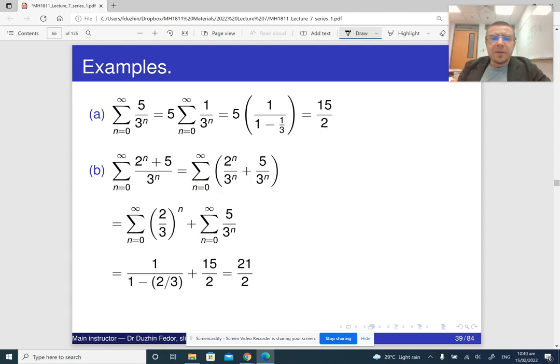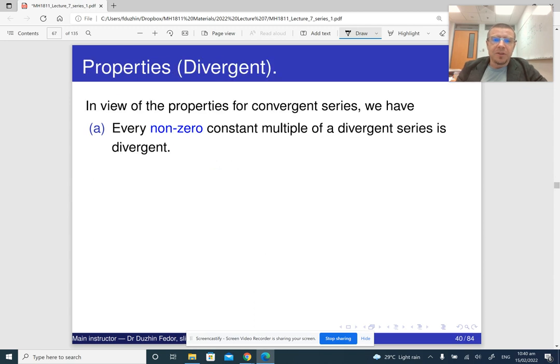Alright, so this is basically how the summation property works, and we can also reverse it. So if you have a divergent series, and if you multiply it by a non-zero constant, of course, it has to be non-zero, because if you multiply by a zero constant, then you will just get the sum of infinitely many zeros, which is zero, and it would converge. But if you multiply it by a non-zero constant, then you will get a divergent series.